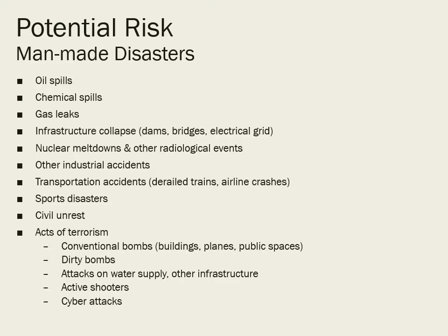In addition to natural disasters, there are man-made disasters, and these can be accidental or intentional. We can have oil spills like the BP spill, chemical spills, gas leaks, and infrastructure collapse — dams, bridges, electrical grids, any type of public infrastructure. We can have nuclear meltdowns and other radiological events, industrial accidents, and transportation accidents like derailed trains and airline crashes. These can all lead to additional disasters. There can also be sports disasters, forms of civil unrest, and acts of terrorism — conventional bombs, dirty bombs, attacks on the water supply and infrastructure, active shooters.